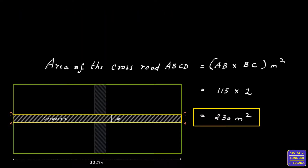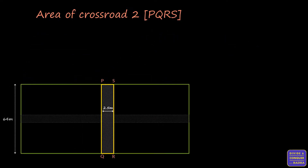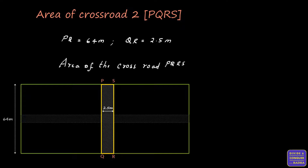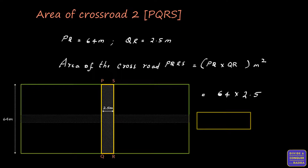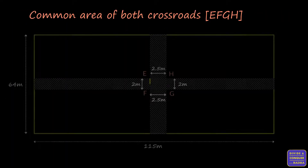Now let's calculate the area of crossroad 2, represented as PQRS. PQ is equal to 64 meters and QR is equal to 2.5 meters. Therefore, area of PQRS equals length into breadth, that is PQ into QR. Substituting the values: 64 into 2.5. On multiplying, we get 160 square meters.